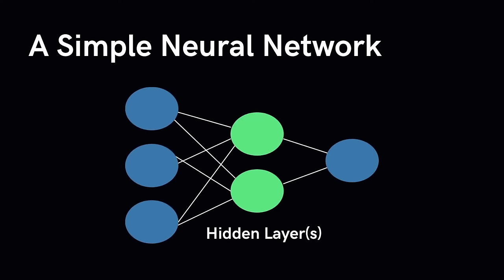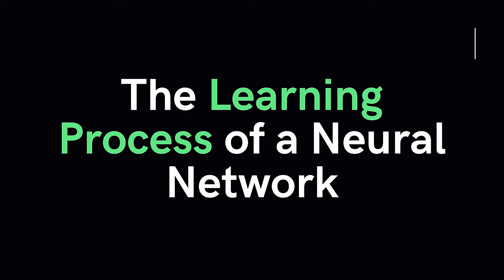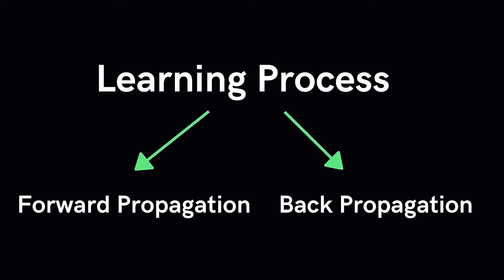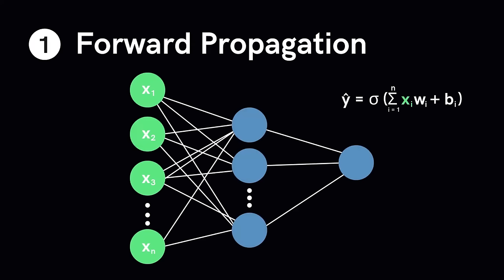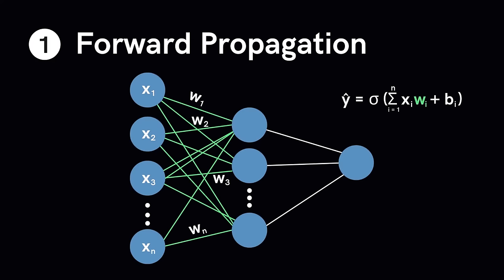The learning process of a neural network can be broken into two main processes: forward propagation and back propagation. Forward propagation is the propagation of information from the input layer to the output layer. The input neurons x1 through xn connect to the next layer through channels assigned numerical values called weights. The inputs are multiplied by the weights and their sum is sent to the hidden layer neurons, where each neuron is also associated with a numerical value called the bias, which is added to the input sum. This weighted sum is passed through a non-linear activation function, which decides if that neuron can contribute to the next layer. In the output layer, the neuron with the highest value determines the final output.